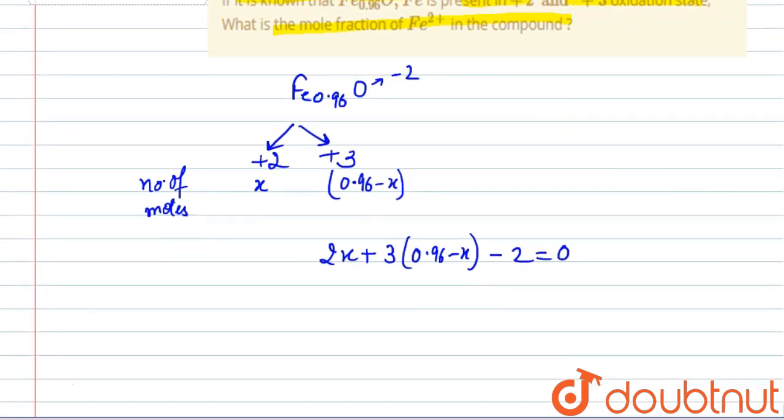Now on solving this we will get 2x plus 3 into 0.96 minus 3x minus 2 equals 0. It will be minus x plus 2.88 minus 2 equals 0. From here the value of x will be 0.88.